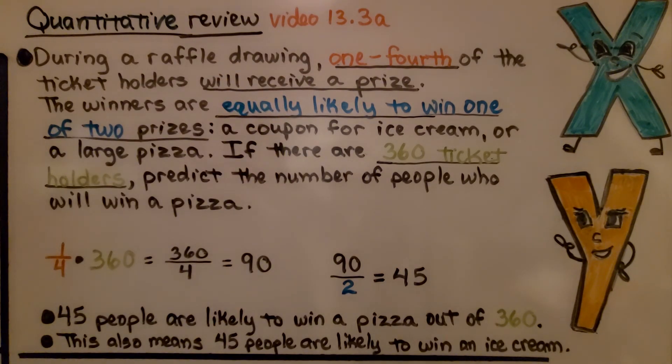So during a raffle drawing, one-fourth of the ticket holders will receive a prize. The winners are equally likely to win one of two prizes, a coupon for ice cream or a large pizza. If there are 360 ticket holders, predict the number of people who will win a pizza.